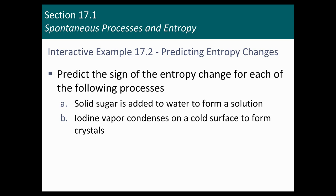Take a minute — you can pause and read. Predict the sign of the entropy change for each of the following: solid sugar added to water to form a solution, and iodine vapor condenses on a cold surface to form crystals. Think about those before you move on, and then the answers will come up.